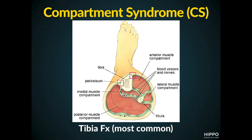So what is compartment syndrome? Here's a cross-section through the leg. What compartment syndrome boils down to is this: the red stuff is muscle, and the green casing around that is the fascia of these muscles. So when these muscles get beat up on, trashed around, squished, or traumatized somehow, they get swollen. When the muscle gets swollen, it decreases the amount of blood that flows through the muscle tissue.